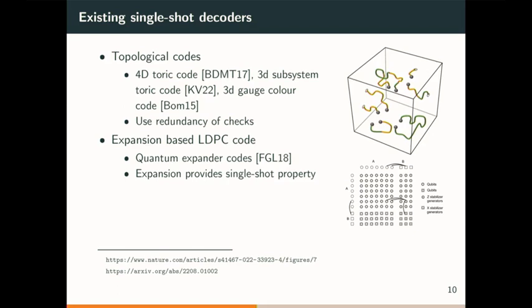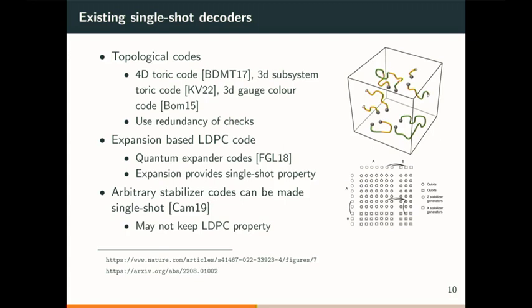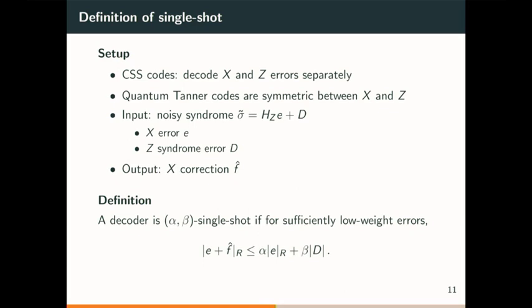Another result is that any arbitrary stabilizer code can be made single-shot — this was by Earl. The idea is to measure combinations of stabilizer generators that are more resilient to measurement errors. However, one weakness is that if you start with an LDPC code, taking many combinations of stabilizer generators may make the resulting checks no longer low-weight. Now let me give the actual definition we use: for CSS codes, it suffices to decode X and Z errors separately, and quantum Tanner codes are symmetric between X and Z, so we consider one type of error.